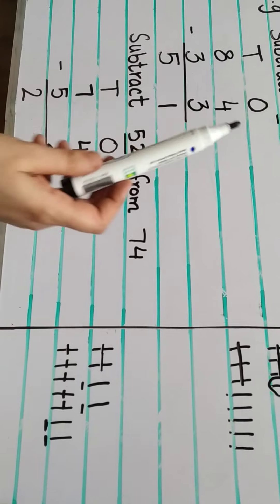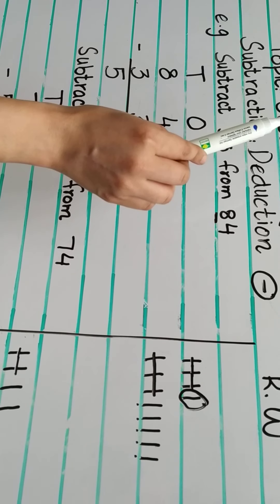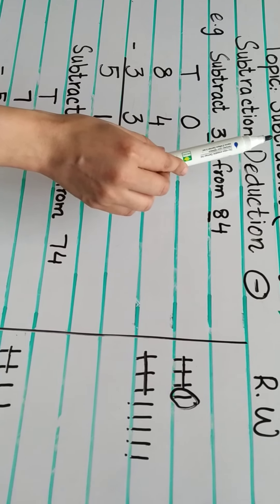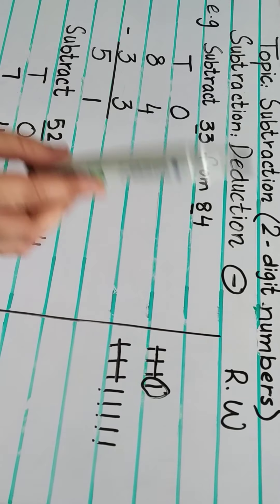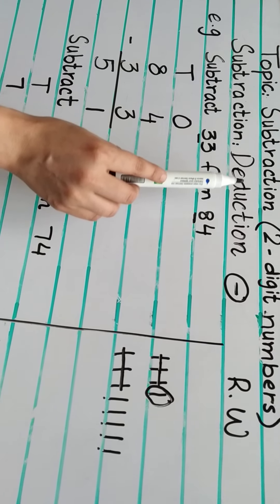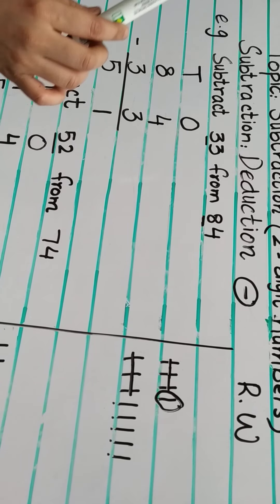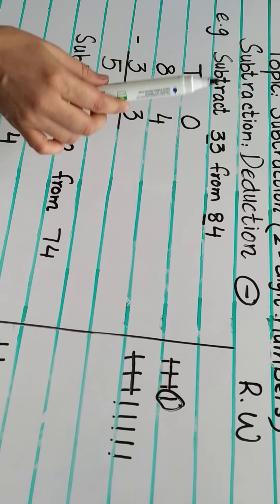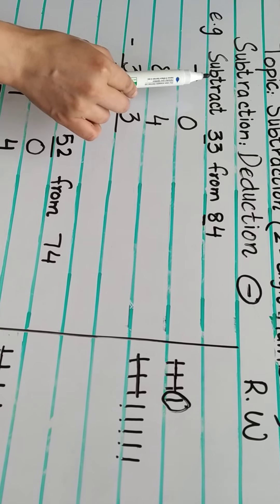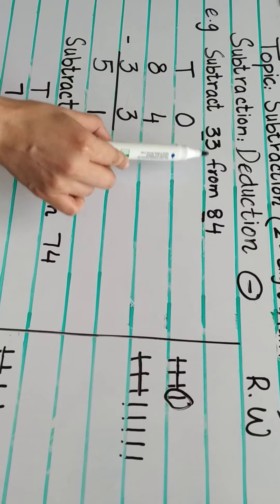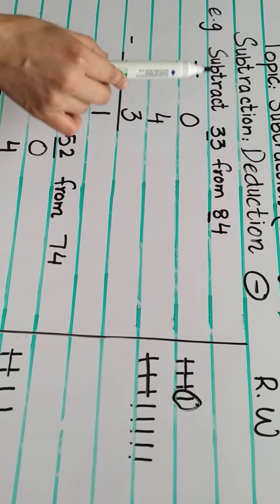I will repeat this again. What we are going to learn today? Subtraction — subtraction of a two-digit number. So subtraction means deduction. It means to deduct one number from another. Let's discuss some examples. First, subtract 33 from 84.